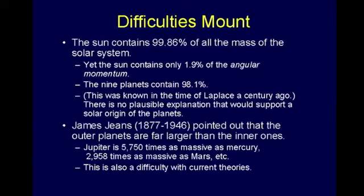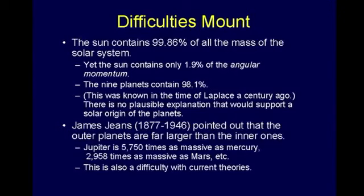The problem is the Sun contains only 1.9% of all the angular momentum, while the nine planets contain 98% of it — and they're further out, not closer in. That makes it even more exaggerated. This was all known during the days of Laplace, and that's one of the reasons he's indicted by his endorsement, because he obviously hadn't thought it through. There is no plausible explanation that can support a solar origin of the planets — people have tried, and nothing really holds up.